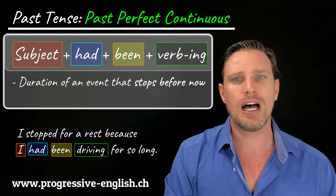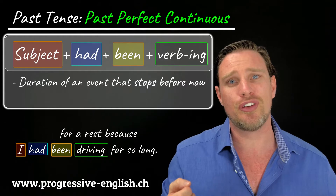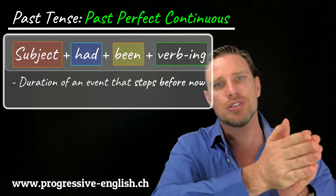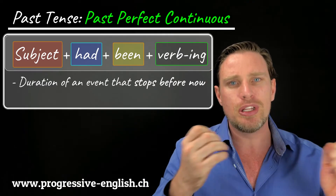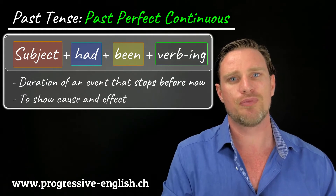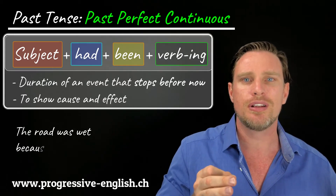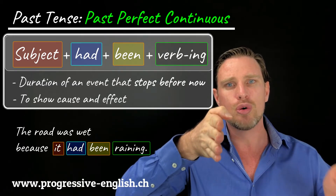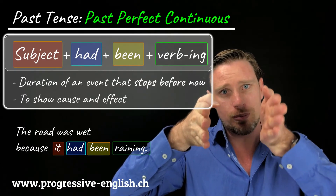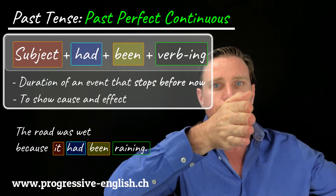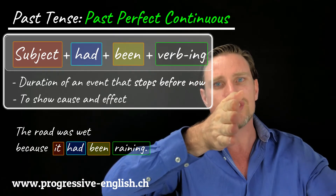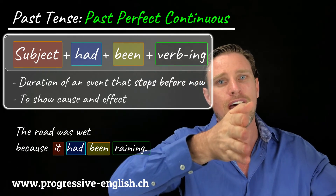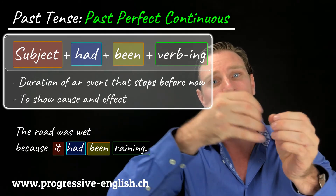The other reason we use the past perfect continuous is to show a progressive action that took place before something else, and it can be used to show cause and effect. For example: The road was wet because it had been raining. The road was wet is past simple; it had been raining is past perfect continuous, showing an event that happened before something else in the past to show cause and effect.